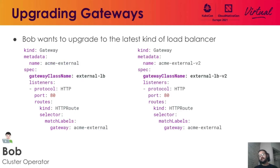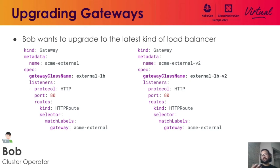At the same time, imagine that Bob wants to test out a new load balancer that their provider has exposed to them. Bob goes ahead and creates another gateway resource with the new gateway class. Notice how the listener sections for the old and new gateway are exactly similar. With this configuration, all the existing HTTP route resources are associated now with two different gateway resources. Bob can go ahead and test all the flows from the new gateway and, once satisfied, upgrade the gateway in their production environment — all without having to talk to any of the route owners.